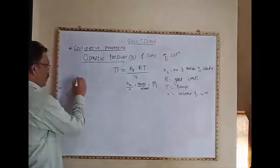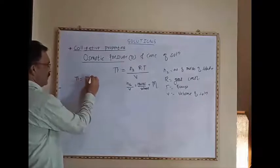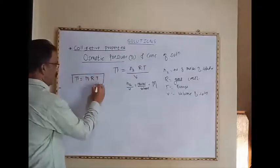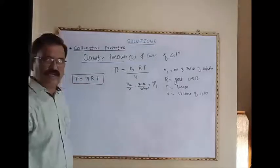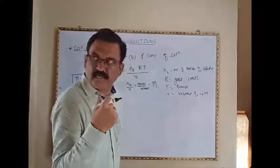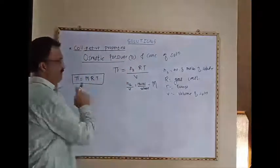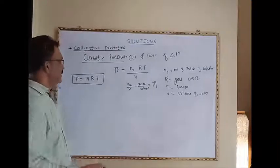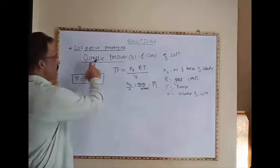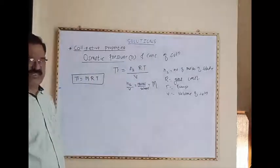Therefore, osmotic pressure π is equal to M into R into T, where M is molarity multiplied by gas constant multiplied by absolute temperature. These are the relationships between osmotic pressure and concentration of a solution.